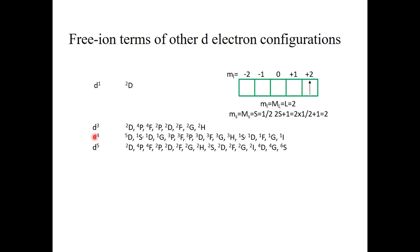For d4 we have even more terms. The term with the highest spin multiplicity is the quintet term — all others are singlet or triplet — making the 5D term the ground term. For d5, we have doublet, quartet, and even sextet terms to consider, so the 6S term is chosen as the ground term since there is no other sextet term.